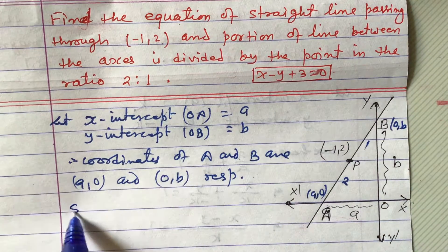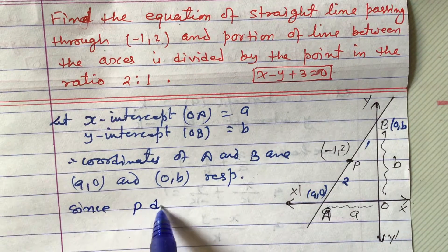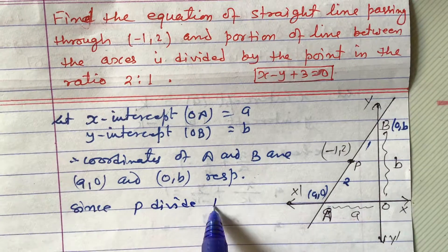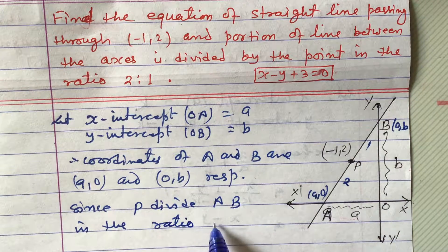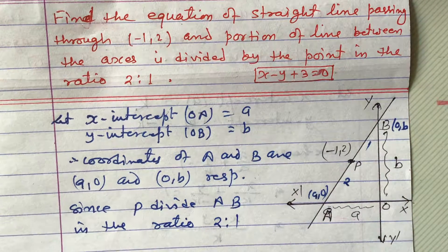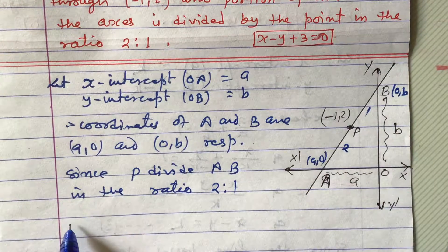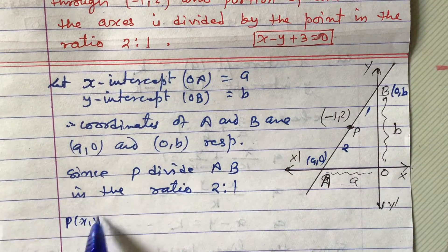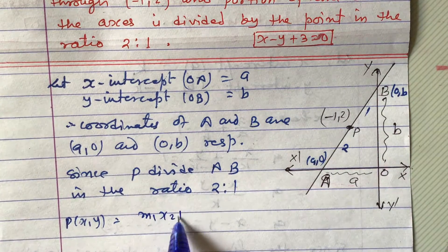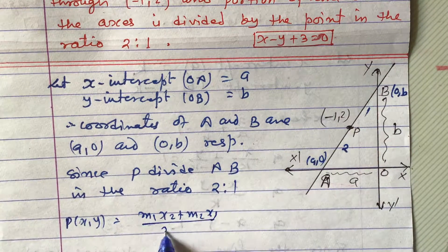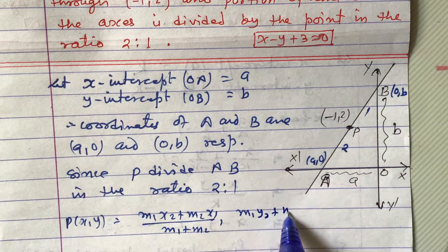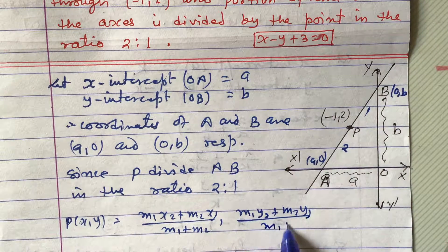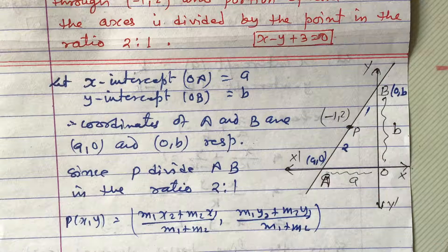Since P divides AB in the ratio 2 is to 1, M1 is to M2 equals 2 is to 1, we apply the section formula. The section formula is: P(x, y) equals M1·X2 plus M2·X1 divided by M1 plus M2, comma M1·Y2 plus M2·Y1 divided by M1 plus M2.